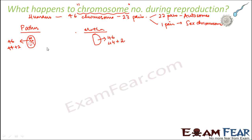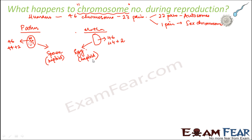During sexual reproduction, the father contributes the sperm — the male sex cell or male gamete — and the mother contributes the egg — the female sex cell or female gamete. The sperm and egg are haploid; they do not have 46 chromosomes. Rather, they have only half the chromosome number, that is a total of 23 chromosomes. The sperm has 23 chromosomes and the egg also has 23 chromosomes, consisting of 22 autosomes and one sex chromosome.